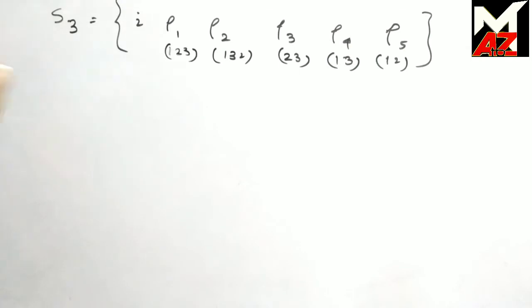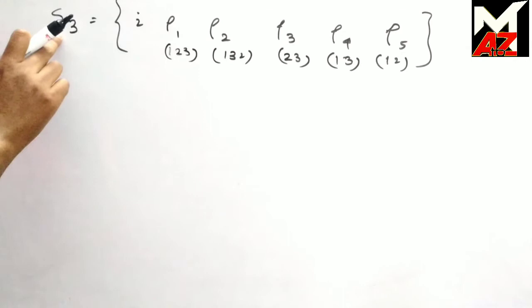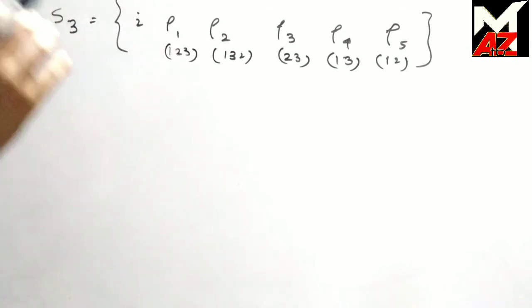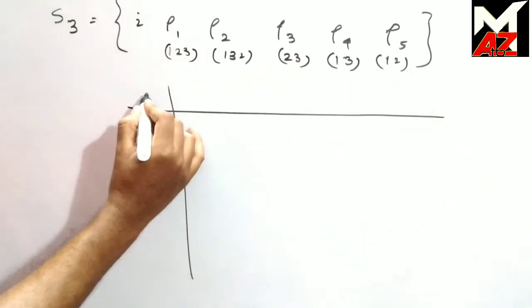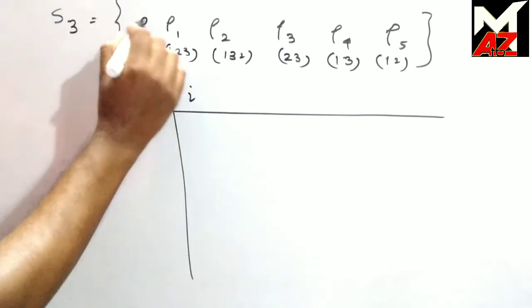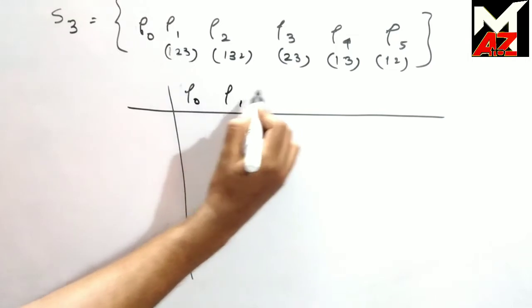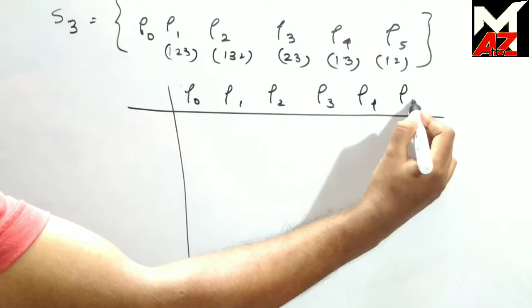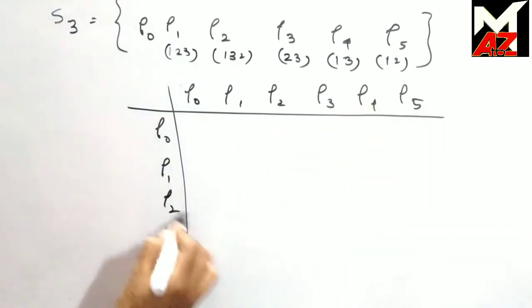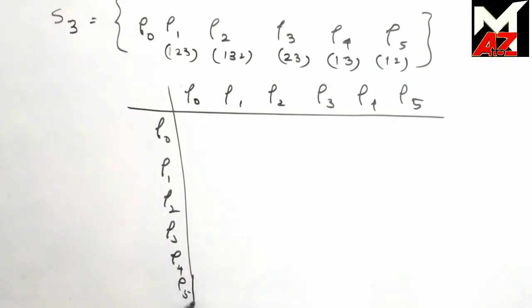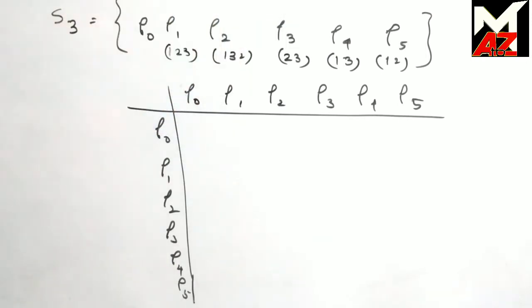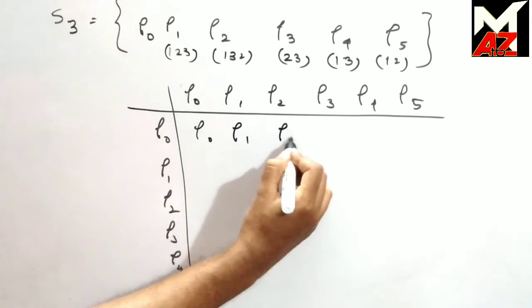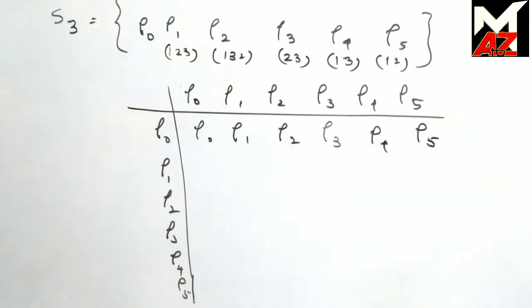Now we make a composition table on this set with respect to the operation of composition of mappings (multiplication of permutations). This is i, or we can write it as ρ0 also. Since multiplying ρ0 with any permutation gives that permutation again, the first row and first column are straightforward.